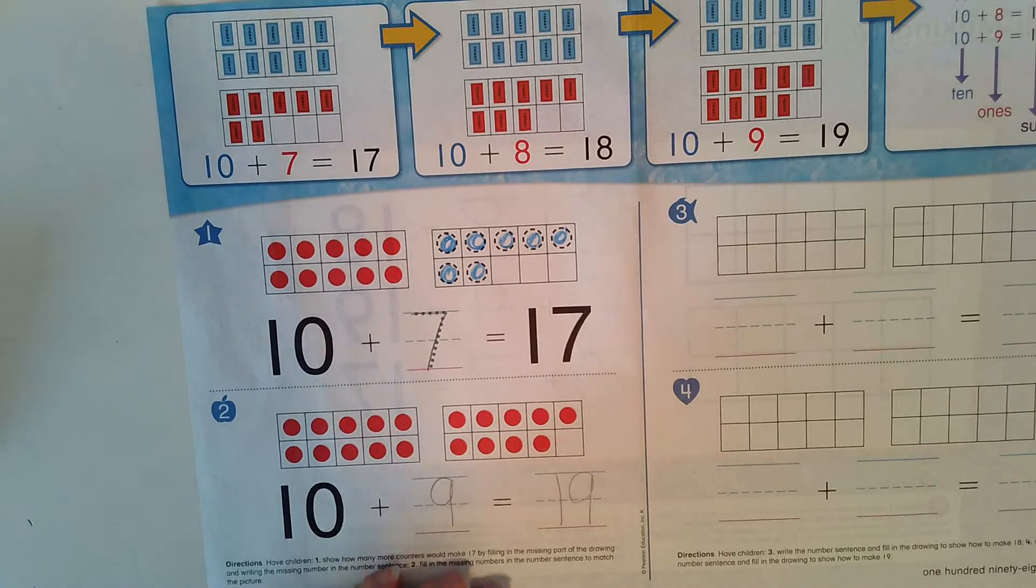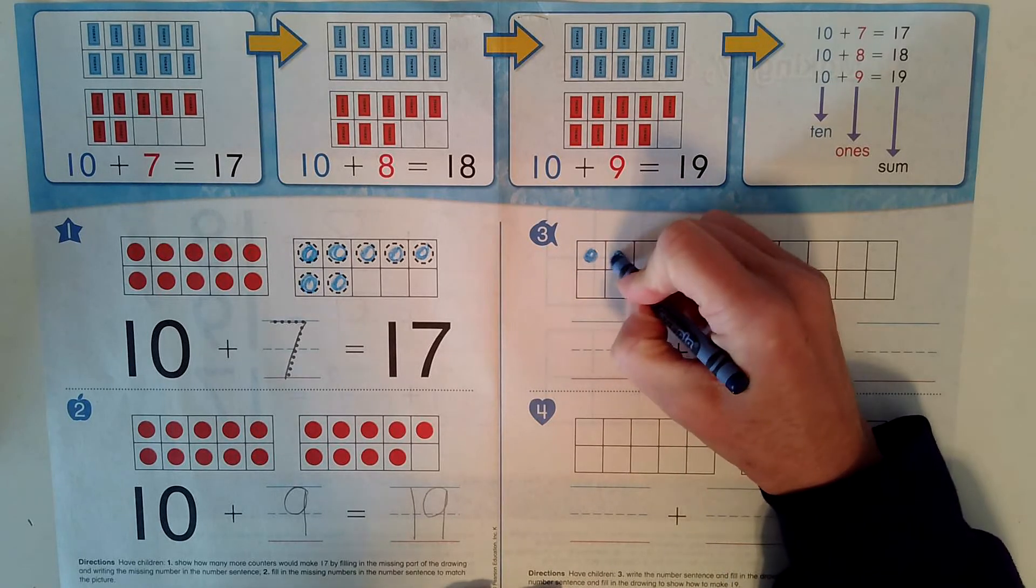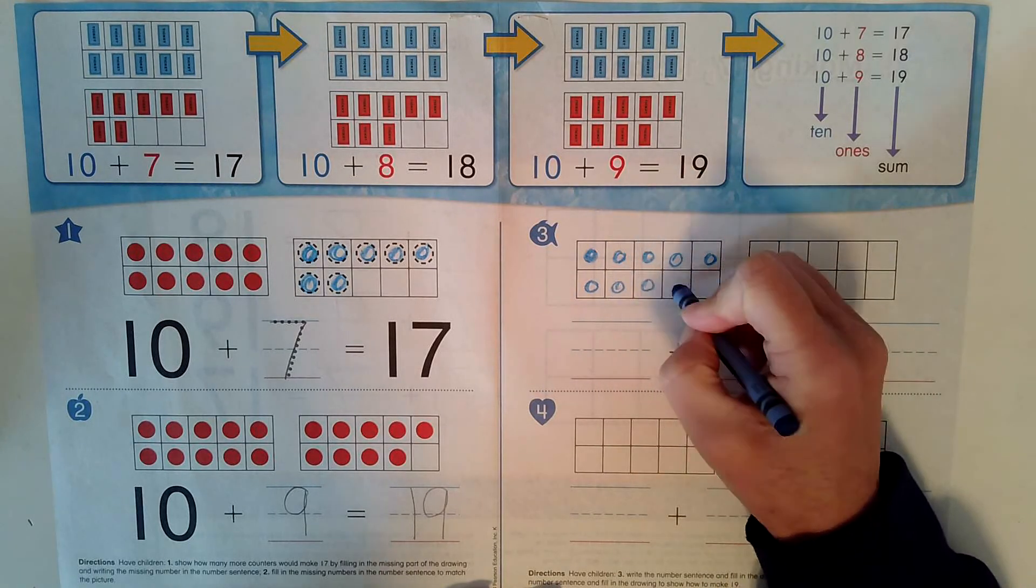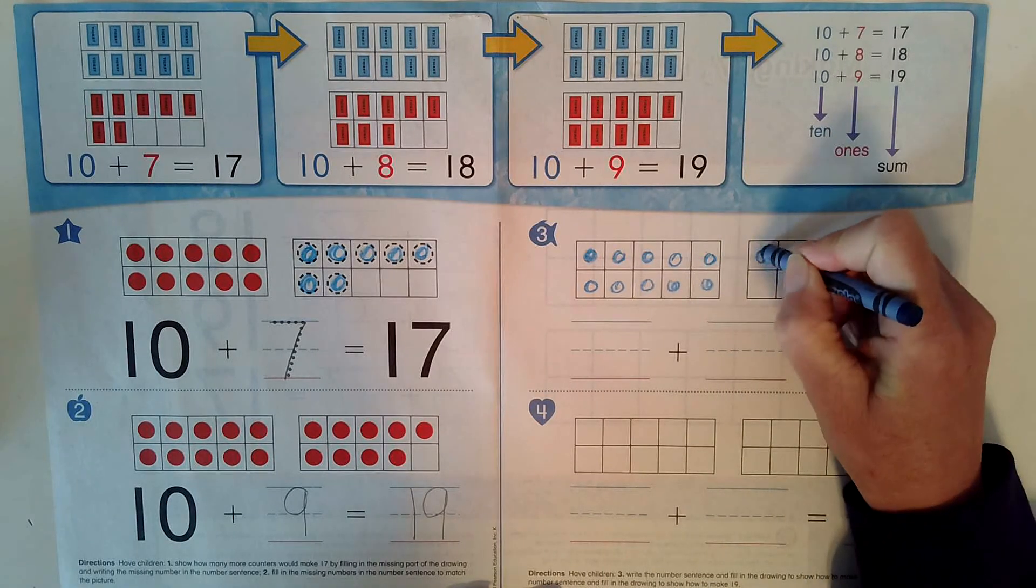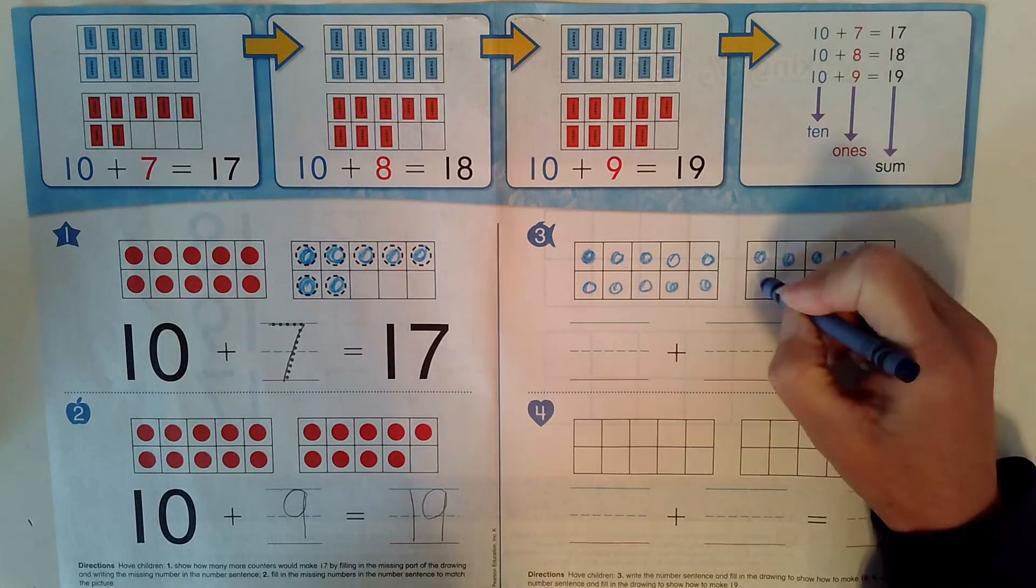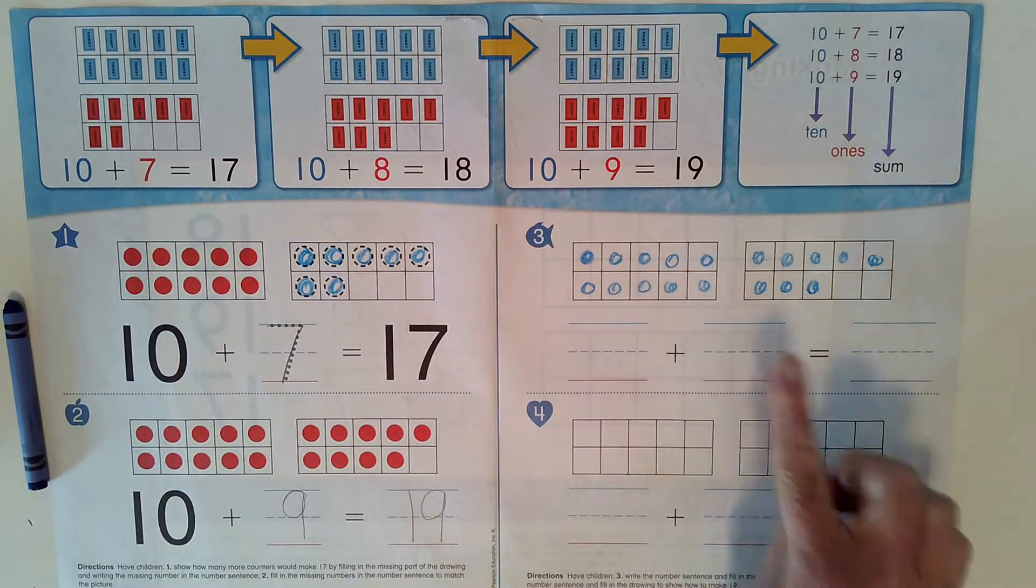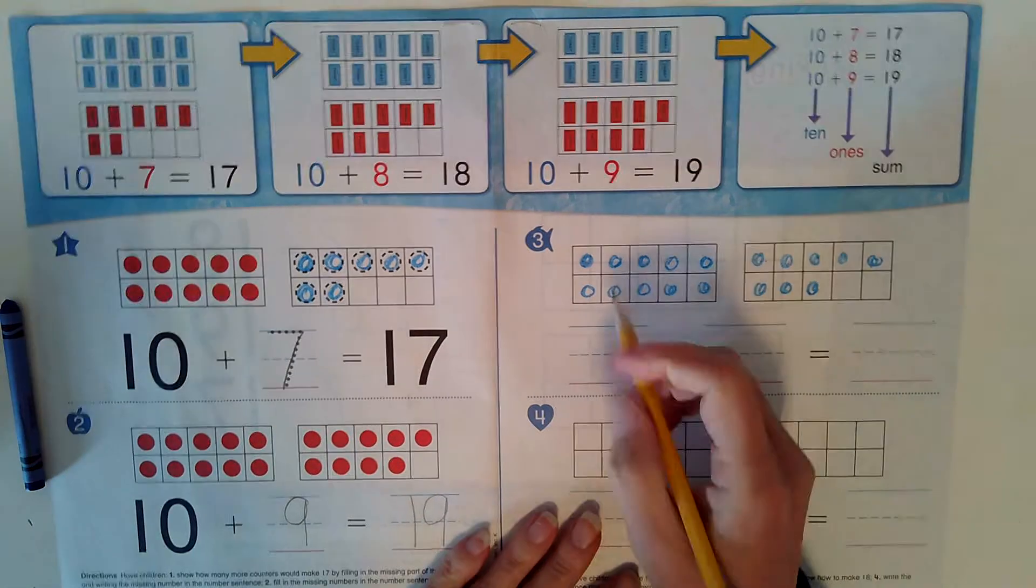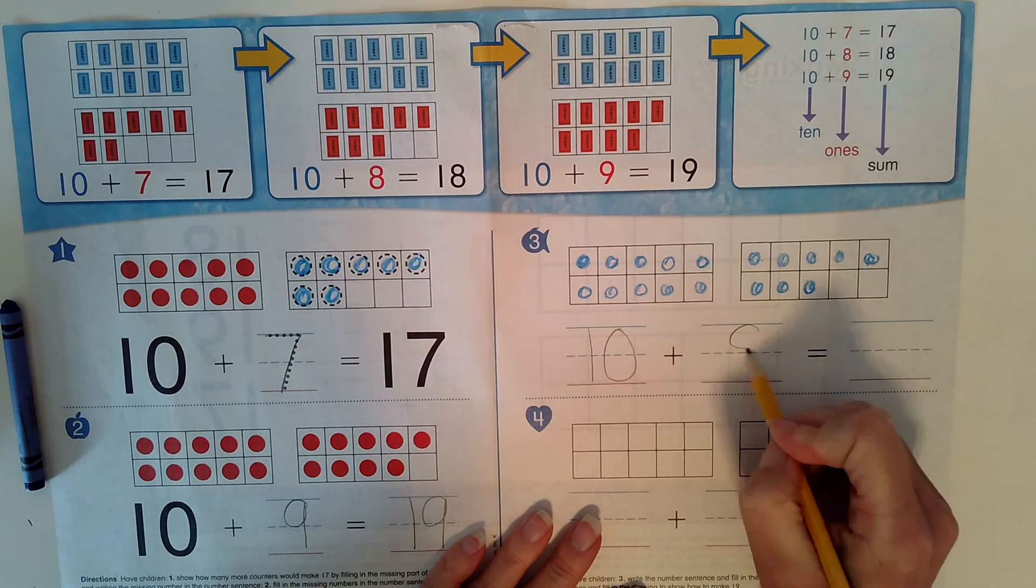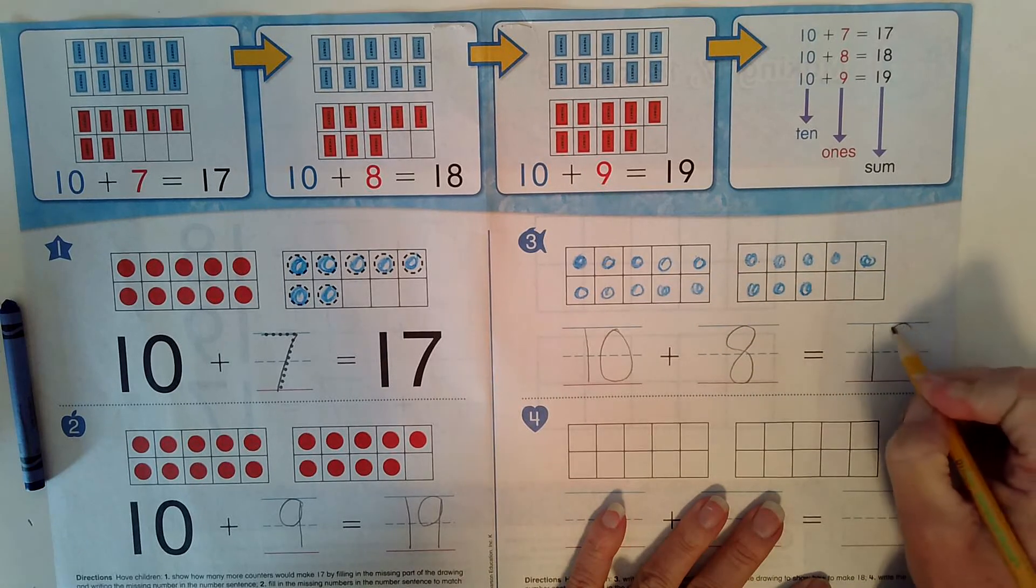Okay. On this one, we are going to draw 18. Are you ready? Draw it with me. 1, 2, 3, 4, 5, 6, 7, 8, 9, 10, 11, 12, 13, 14, 15, 16, 17, 18. We drew 18. So what's our addition sentence? 10 plus 8 equals 18. 10, 8.